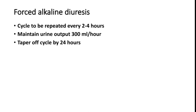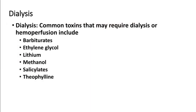If the patient does not improve with forced alkaline diuresis or if there is a contraindication, we can go for dialysis. Barbiturates are a dialyzable toxin. Other dialyzable toxins include ethylene glycol, lithium, methanol, salicylates, and theophylline.